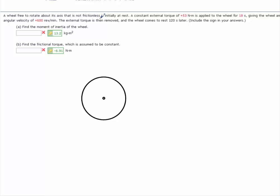The external torque is then removed and the wheel comes to rest 120 seconds later. We want to find the moment of inertia of the wheel and find the frictional torque, which is assumed to be constant.